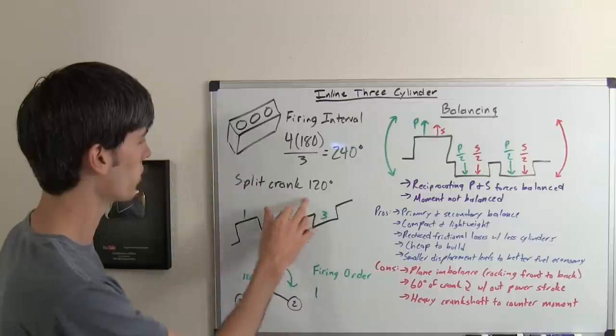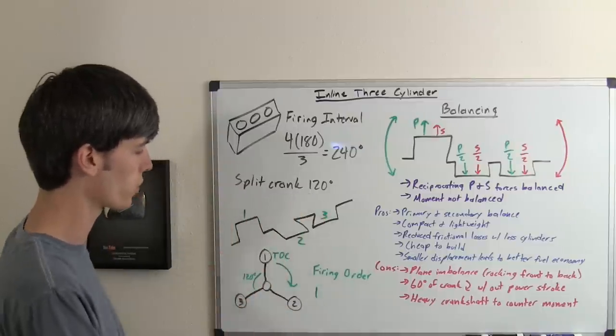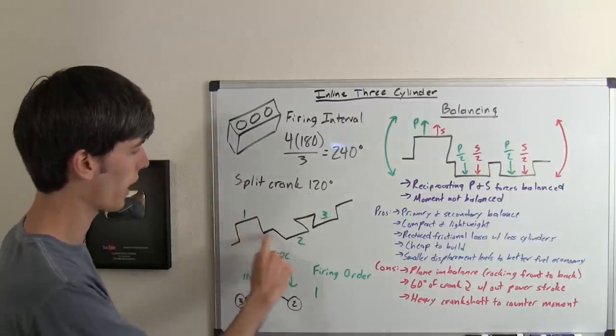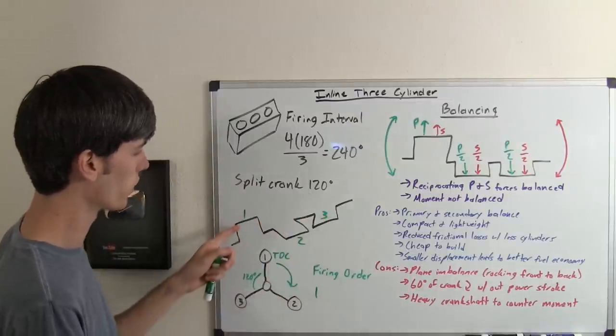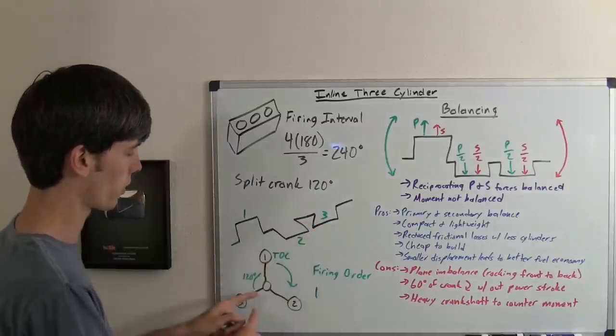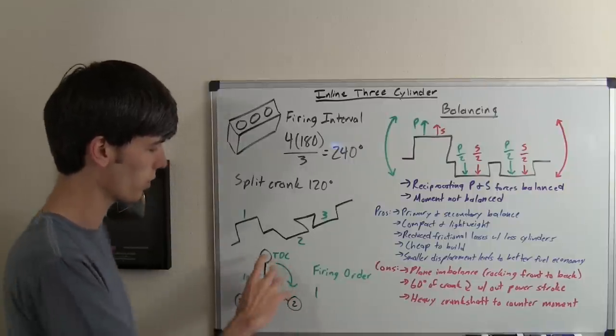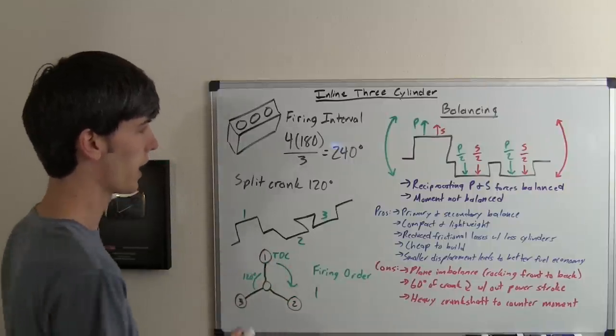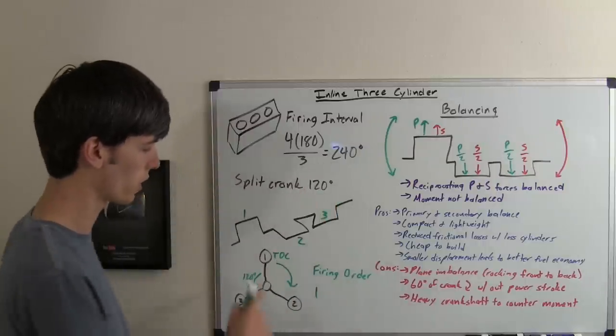So 240 degrees, that means we can split the crankshaft into 120 degrees. So here we've got a look at a three-cylinder crankshaft, cylinder one at top dead center, cylinder two off to the right, and cylinder three off to the left. So if we rotate this to the right, this is top dead center, and our firing interval is every 240 degrees.